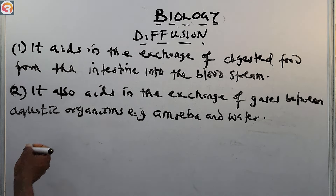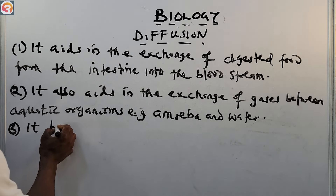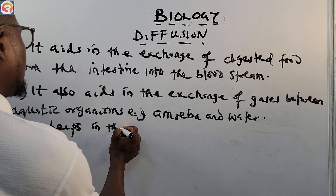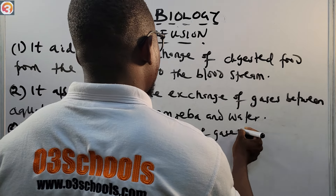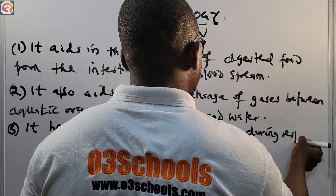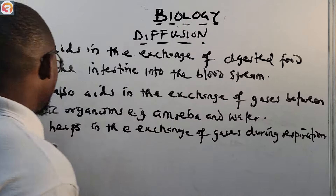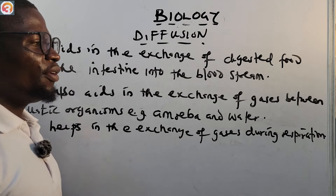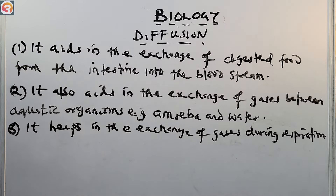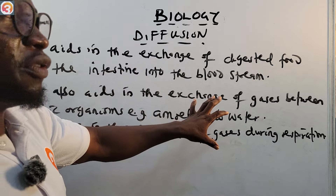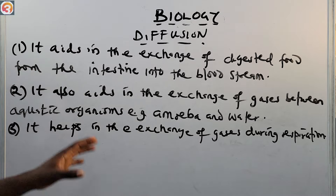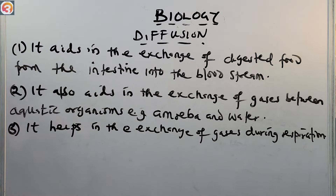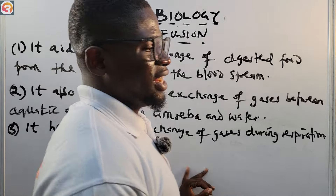Number three: diffusion also helps in the exchange of gases during respiration. So those are the three main importances of diffusion — exchange of digested food from the intestine into the bloodstream, exchange of gases between aquatic organisms like amoeba and water, and exchange of gases during respiration.